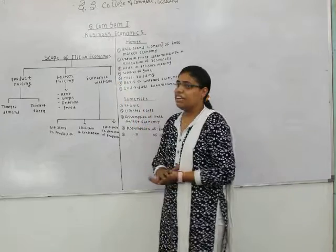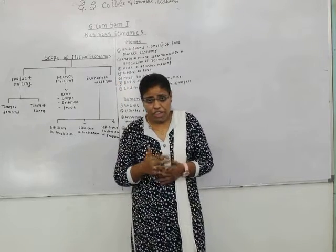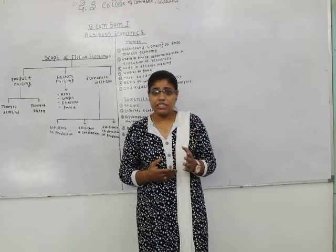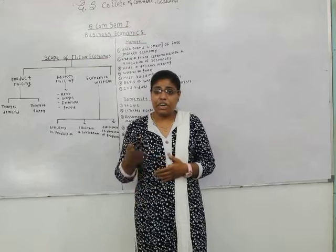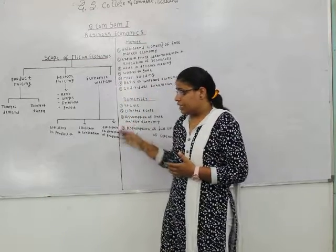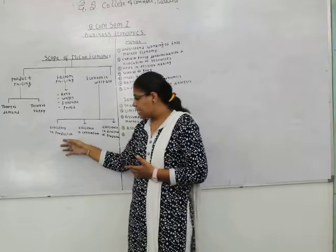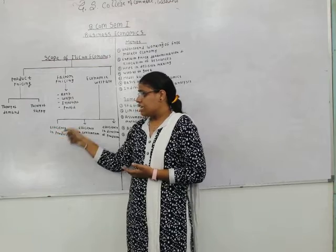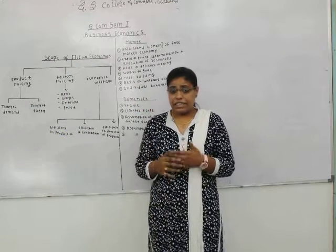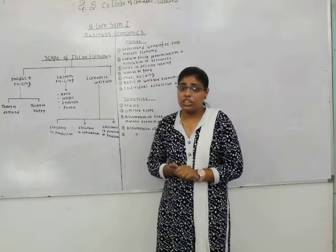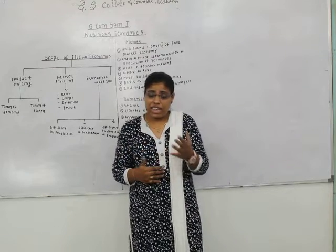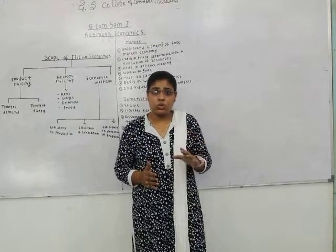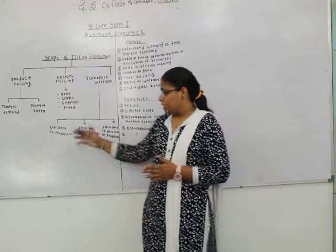The third scope is theory of economic welfare. It deals with the allocation of resources in such a manner that maximum satisfaction can be attained. It is divided into three parts: efficiency in production, efficiency in consumption, and efficiency in direction of production. Efficiency in production states that the production of goods and services should be done in such a manner that all scarce resources are optimally utilized and maximum goods and services could be produced with the available resources.